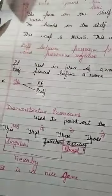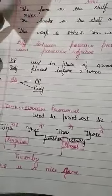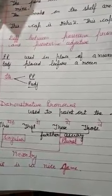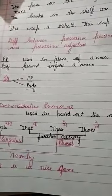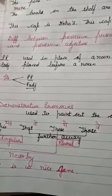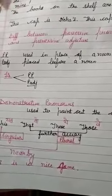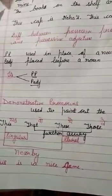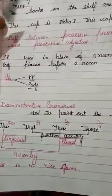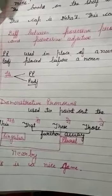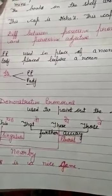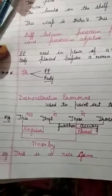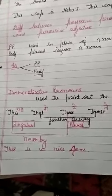The major difference between possessive pronouns and possessive adjectives is that a possessive pronoun is used in place of a noun, but the possessive adjective is placed before a noun. The last one is 'its,' which is common — it is used as both a possessive pronoun and a possessive adjective.